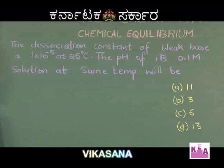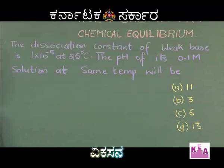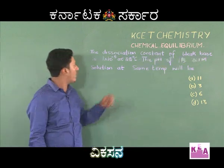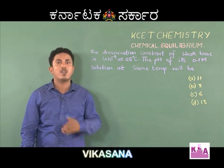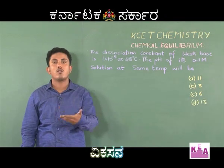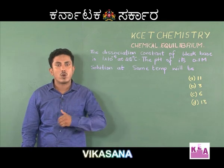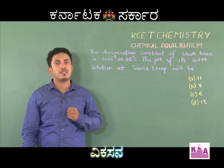This problem is related to calculating the pH of a solution. The dissociation constant of a weak base is 1 × 10⁻⁵ at 25 degrees Celsius; the pH of its 0.1 molar solution will be: Option A: 11, Option B: 3, Option C: 6, Option D: 13. The dissociation constant is a measure of the strength of a weak acid or weak base; larger the value, stronger the acid or base. For an acid it is Ka, for a base it is Kb.